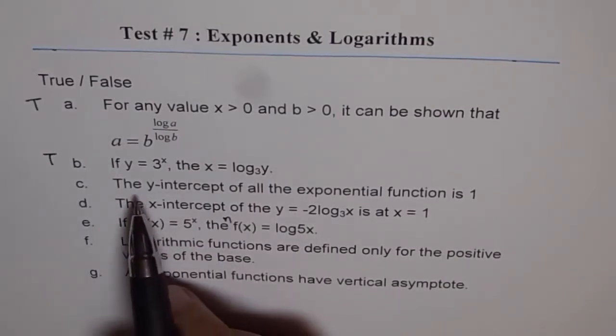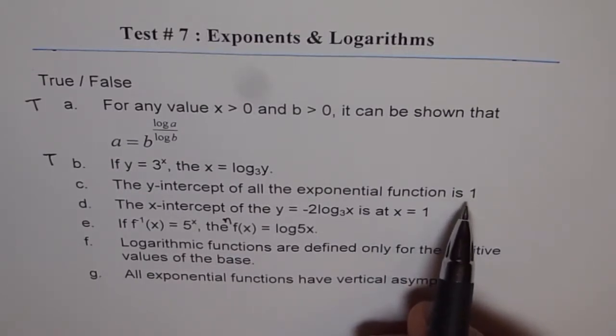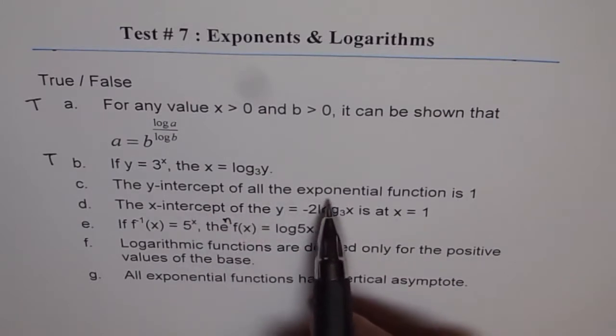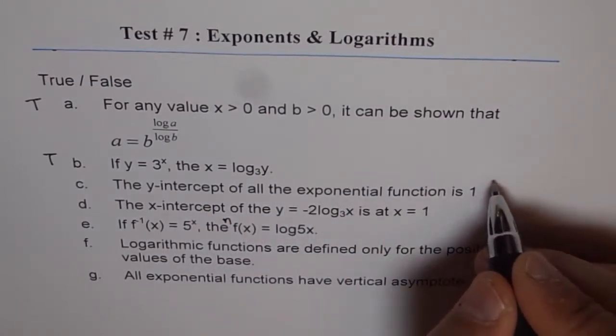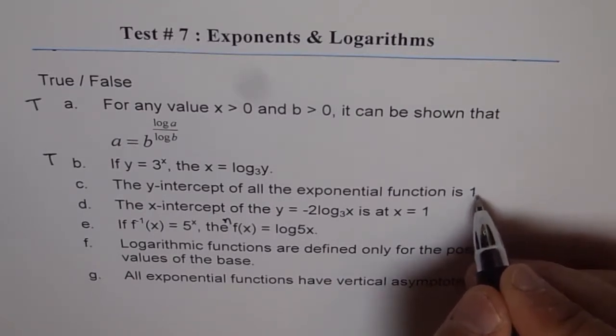See, the y-intercept of all exponential functions is at 1. So is it true or not? So y-intercept of exponential. So if you write 2 to the power of x and x is 0, then do you get 1? Yes, you do, right?